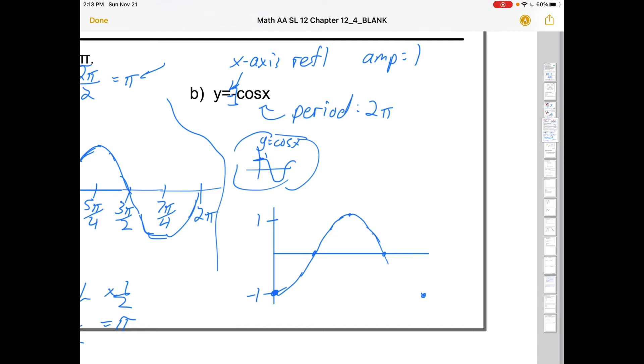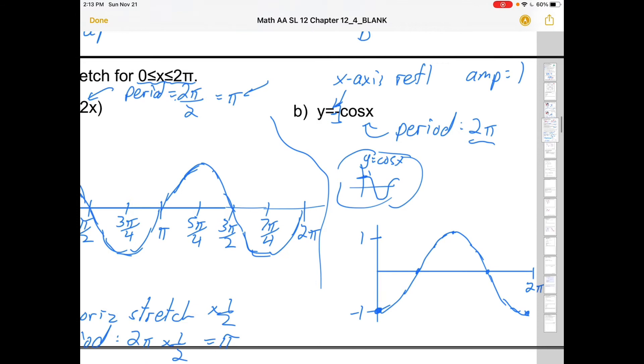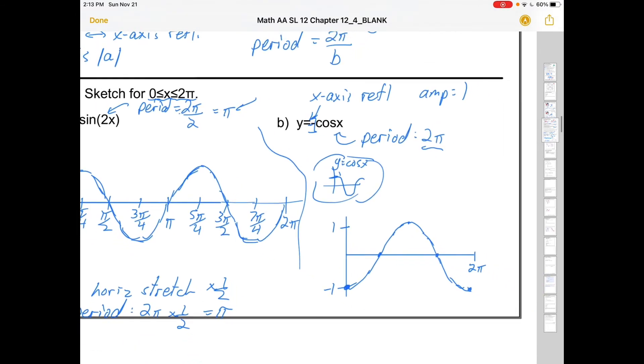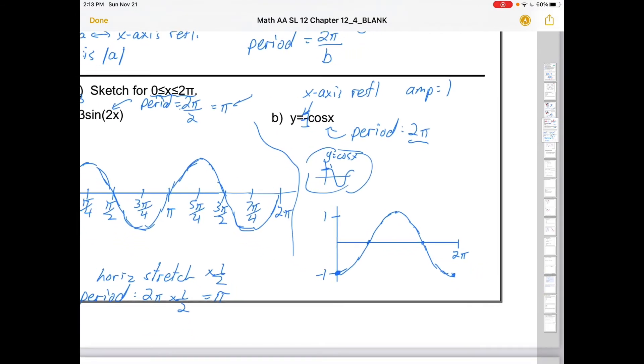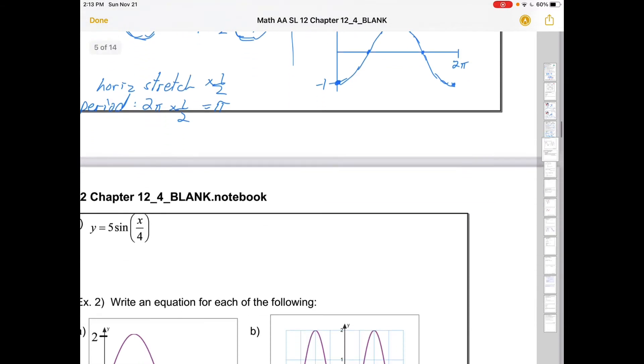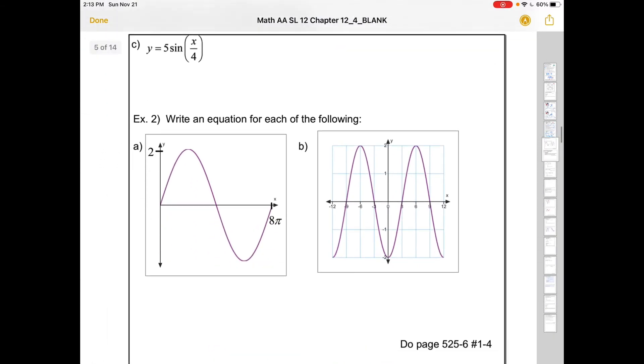And we should definitely be graphing in pencil. And in this case, the period's 2π. So there's 2π. We've automatically shown the domain that they were looking for, from 0 to 2π. You can check these with your GDC. Let's do one more.